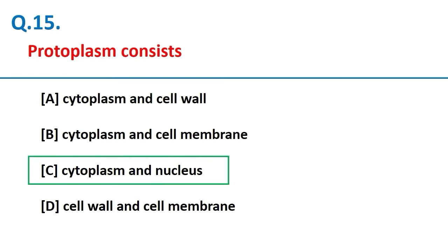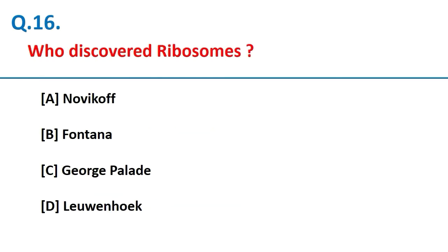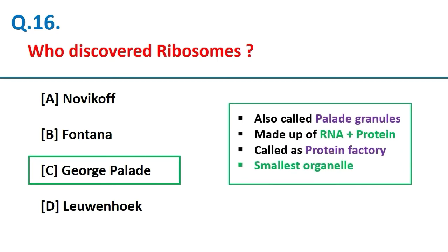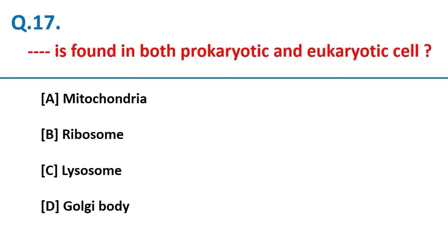Ribosomes were discovered by George Palade, which is why ribosomes are also called Palade granules. Ribosomes are made up of RNA and protein. They are called the protein factory of the cell and are the smallest organelle in the cell. Ribosomes are found in both prokaryotic and eukaryotic cells.